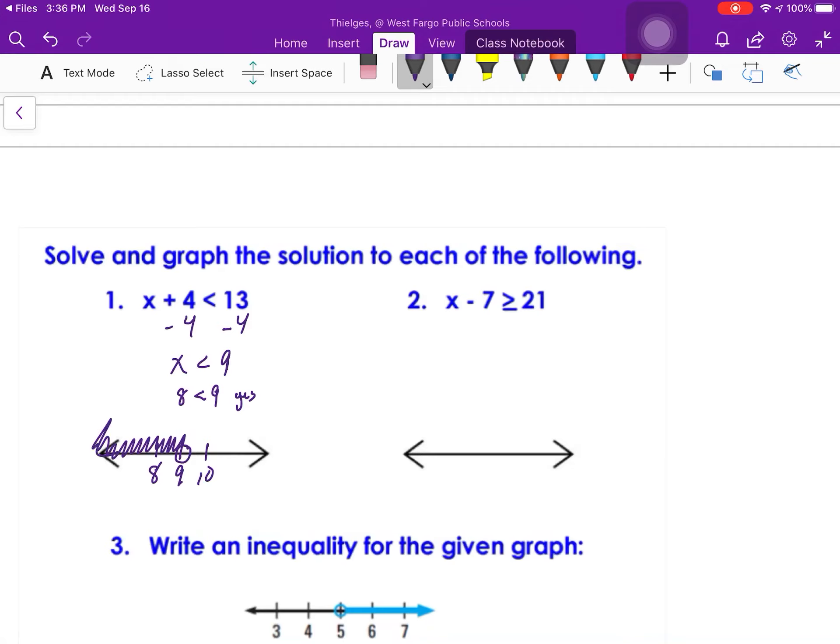Okay, inverse of subtraction is addition, so I'm going to add 7. I get x is greater than or equal to 28. So again, I'll put 28, one number smaller, 27, one number bigger, 29. Be realistic about it. This time, I'm going to fill in the dot on that 28, because it's equals to that line right there, and now I'm going to pick a number to test out. I'm going to go 29, and is 29 bigger than 28? Is it opening up the bigger number? Yes. So I'm going to shade towards 29.